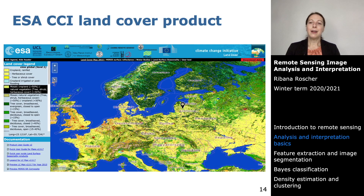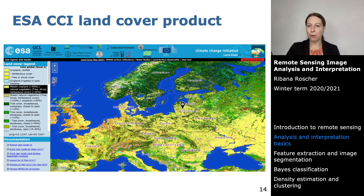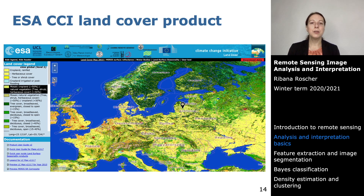The Climate Change Initiative land cover product is provided by the European Space Agency. You can access and explore it on the web. On the left you can see all the fine-grained classes, and on the right is the actual classification of Europe, where colors indicate which class each pixel is assigned to.